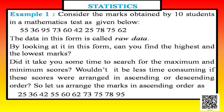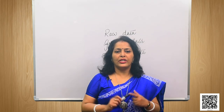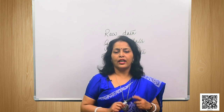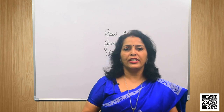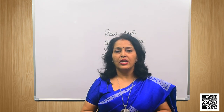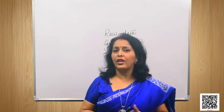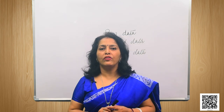Consider the marks obtained by 10 students in a mathematics test: 55, 36, 95, 73, 60, 42, 25, 78, 75, and 62. If I ask you to find the lowest or highest mark, you have to look through all the numbers carefully. This is not easy — you cannot answer immediately. In other words, these numbers as given are not presenting any useful information for statistics.